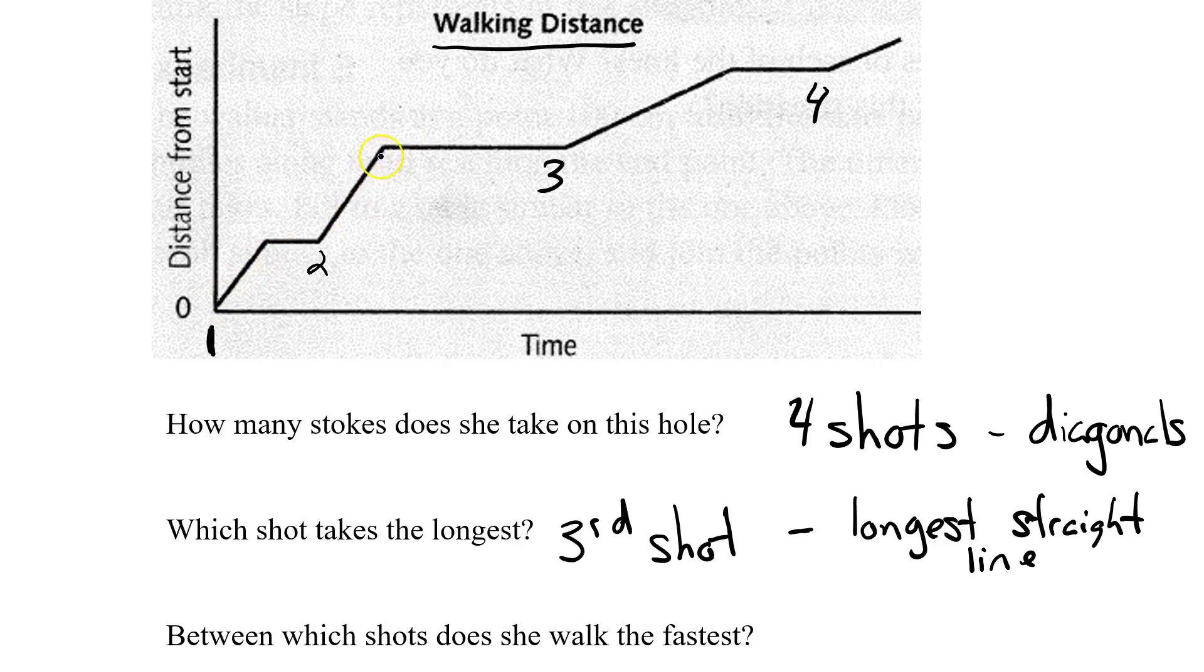So we have this one, this one, and this one, and this one. Just from a visual check, it's clear that this is my steepest line. So between which shots does she walk the fastest? Between the second and the third. We want the steepest diagonal.